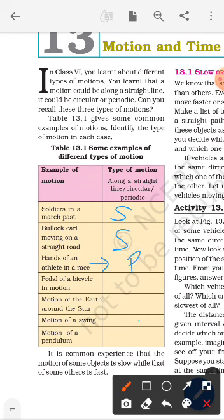Paddle of bicycle in motion. It could be circular motion. Motion of earth around the sun. When earth revolves around the sun, then it is a circular motion and also a periodic motion.